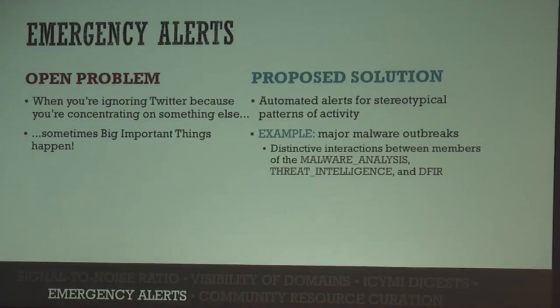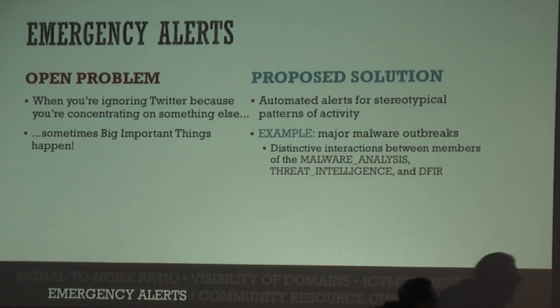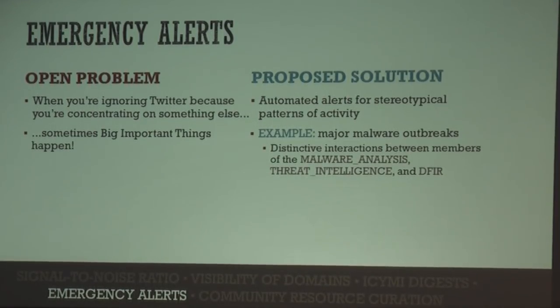If you're ignoring Twitter because you're trying to concentrate on something else, sometimes big important things happen and you have no clue for hours — which really sucks if it's, say, WannaCry. So we want automated alerts when there are stereotypical patterns of activity within the hacker sphere associated with an important type of incident. It's really obvious when a major new malware outbreak is developing because there are these distinctive, quantifiable patterns of interactions between members of the malware analysis, threat intelligence, and DFIR lead lists — I can see it happening within about 30 minutes of something starting.